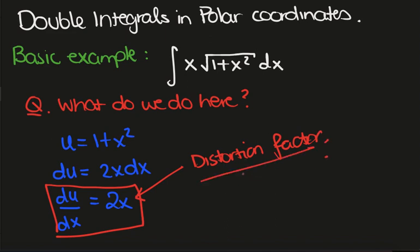That's just the way to think about it. This is something that a lot of students get confused about when we convert to polar coordinates, because the distortion factor appears when we do these double integrals but it's not exactly clear why it's occurring. So bear this example in mind as we discuss what the higher-dimensional version of this is.